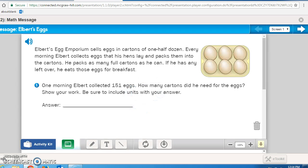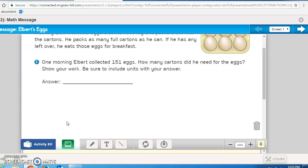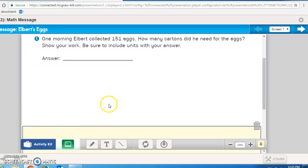Please turn to Math Journal, page 201. Pause the recording now if you need to until you get onto that page. This page reads, Elbert's Egg Emporium sells eggs in cartons of one half dozen. Every morning, Elbert collects eggs that his hens lay and packs them into the cartons. He packs as many full cartons as he can. If he has any left over, he eats those eggs for breakfast. One morning, Elbert collected 151 eggs. How many cartons did he need for the eggs? Show your work and be sure to include units with your answers.